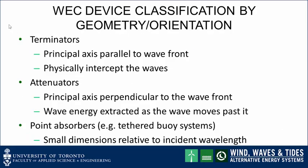We can also classify wave energy converters by geometry or orientation. The three categories are terminators, attenuators, or point absorbers. For terminators, the principal axis is parallel to the wave front, and these devices physically intercept the waves. Attenuators have their principal axis perpendicular to the wave front, and wave energy is extracted as the wave moves past it. Point absorbers, essentially tethered buoy systems, ride the surface of the wave and extract wave energy as the wave passes underneath. Point absorbers tend to have small dimensions relative to the incident wavelength.